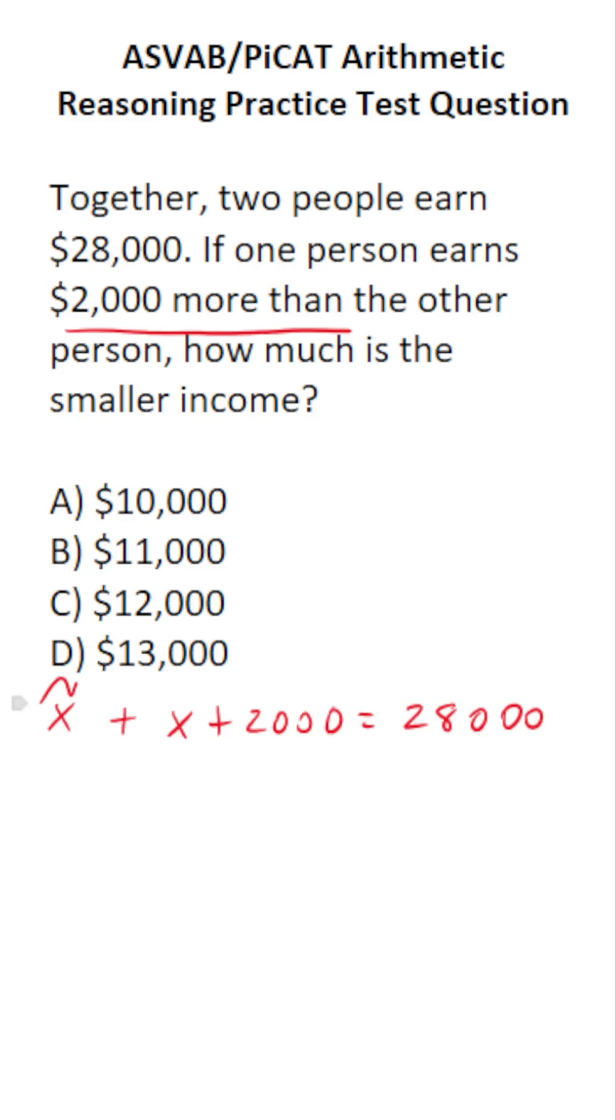This is one person's income and this is the second person's income. In order to figure this one out, we're going to have to solve for X. So we have X plus X, which is 2X plus 2,000 equals 28,000.